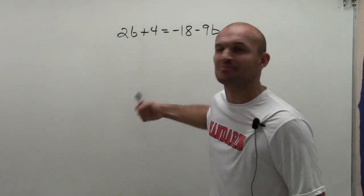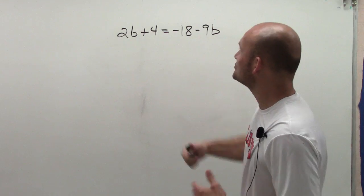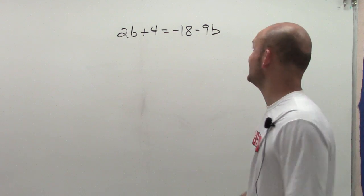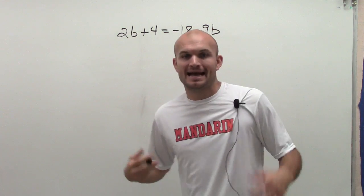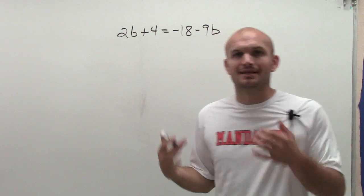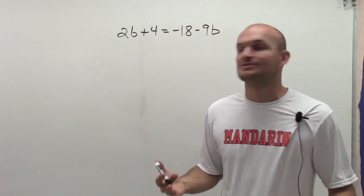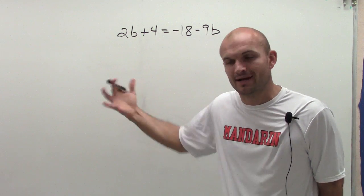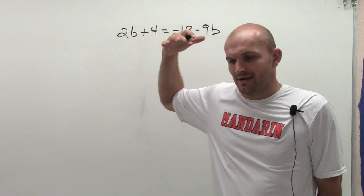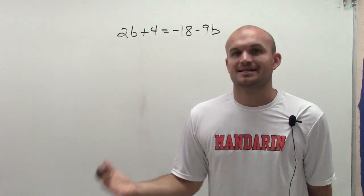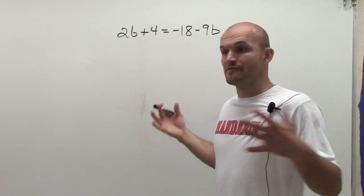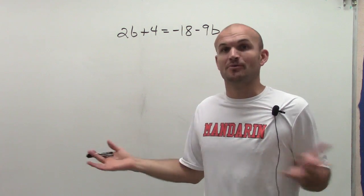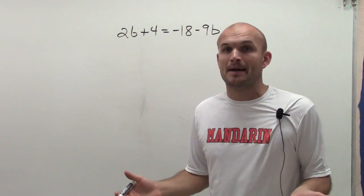So let's get at this problem. I have 2b plus 4 equals negative 18 minus 9b. And what trips up a lot of students is: let's get the variable by itself. But if I have a variable on both sides, which variable am I going to undo the operations from?